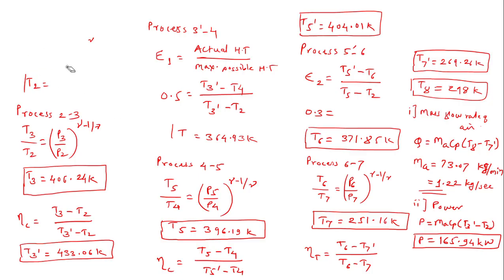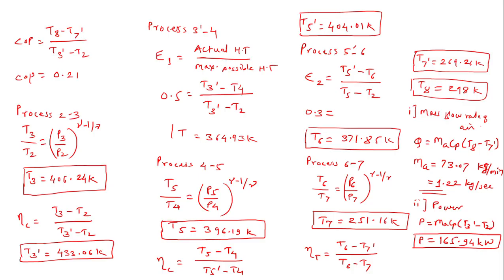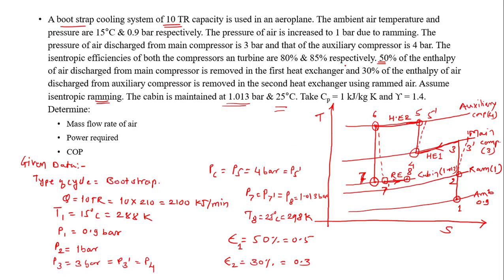Finally, the COP. The formula is: COP equals refrigerating effect divided by work done, which is (T8 minus T7-dash) divided by (T3-dash minus T2). From this, the COP is 0.21. The tricky part of this problem was the enthalpy statement — don't get confused, as that refers to the heat exchanger effectiveness.